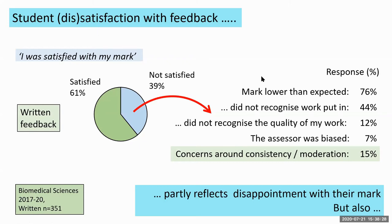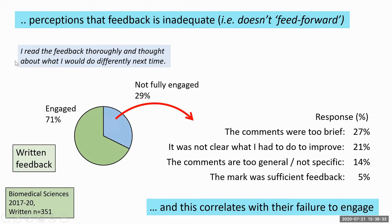We also looked at why students didn't engage with their feedback. The question was: 'I read the feedback thoroughly and thought about what I would do differently next time.' Across 350 Biomedical Sciences students over three cohorts, 30% disagreed. Reasons include: comments were too brief; it was not clear what they had to do to improve; comments were too general or not specific; and the mark was considered sufficient feedback. These are reasons we've heard over and over in the literature, suggesting assessors are unable or unwilling to give feedback that satisfies students' feed-forward needs.